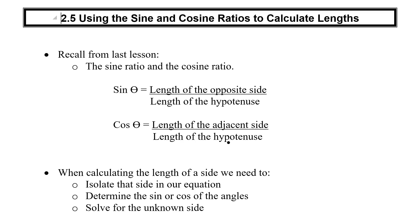Just like the tangent ratio, when we're looking for a length, we have to do a few things. First of all, we want to get that length by itself isolated in the equation. You want to determine the sine or the cos of the angle, whichever one you're going to be using. And then you're going to solve for that unknown side. So very similar steps to the tangent. Isolate, sine or cos, solve.